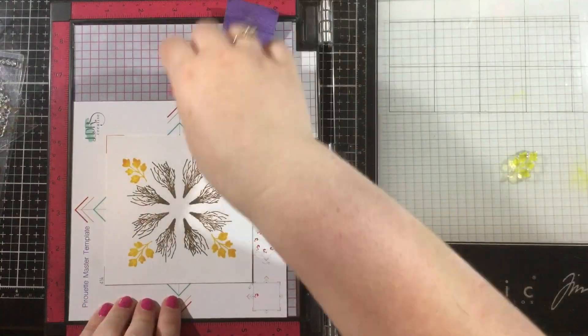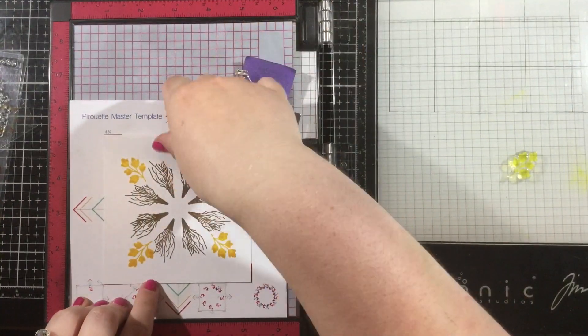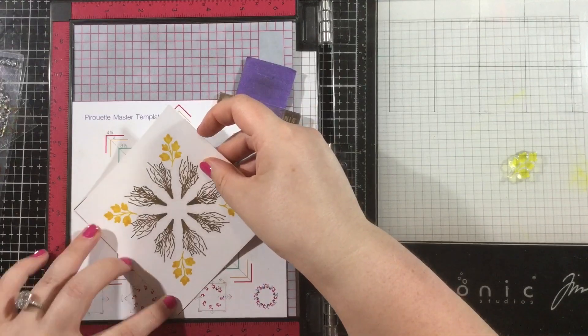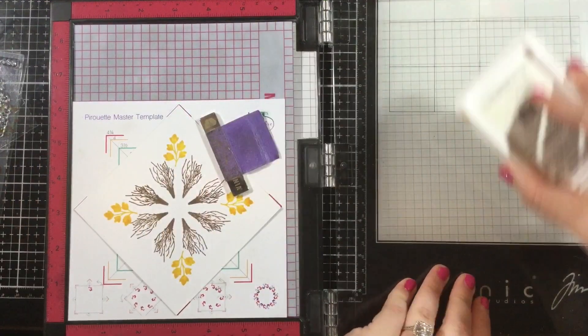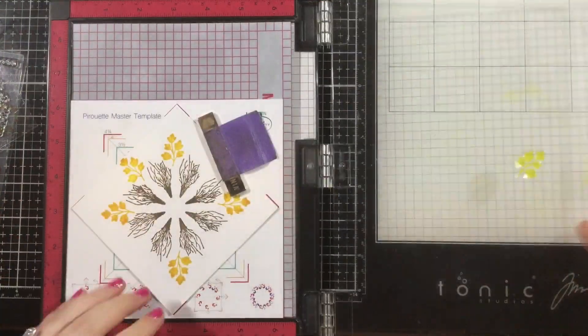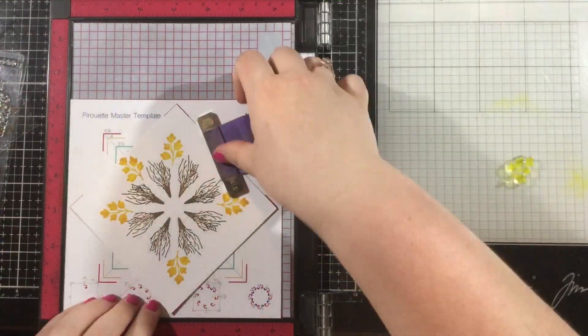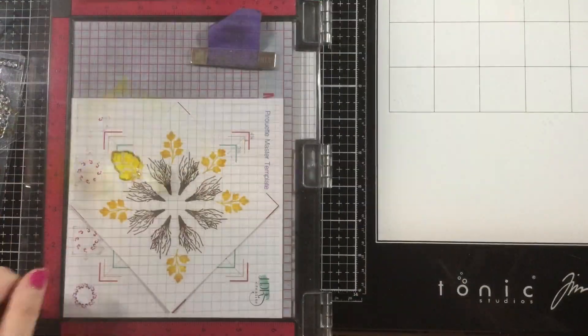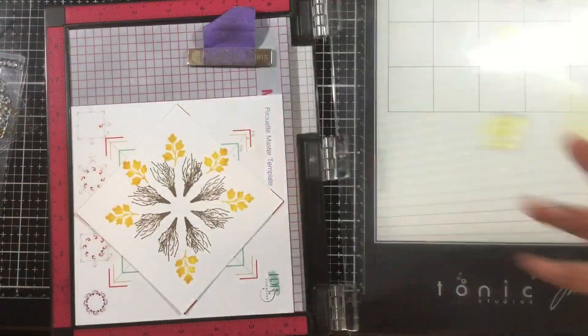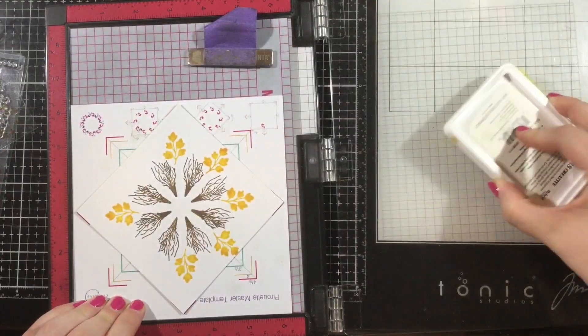So I'll make four stampings, turning my paper or the whole pirouette template, and then I will turn my paper just one turn and line it up so it's in the diamond orientation, and then I can do my other four stampings and that's going to make all eight stampings complete.